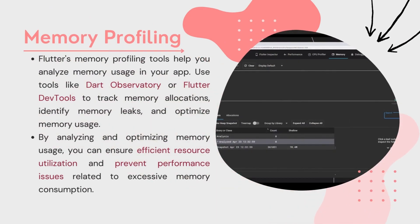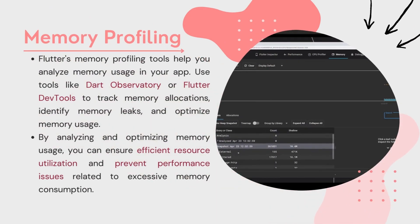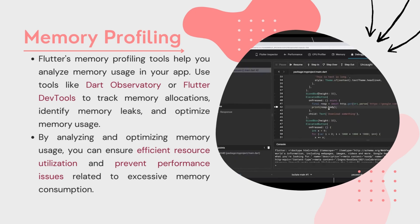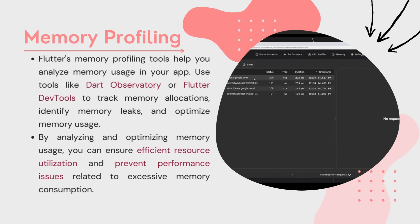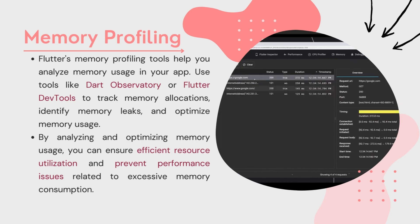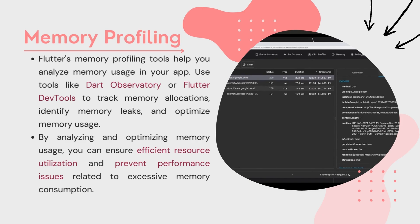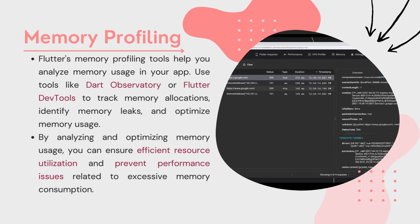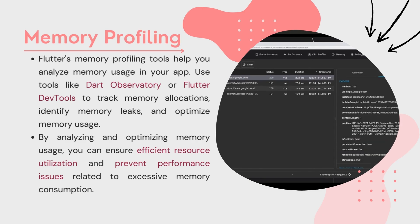Memory Profiling. Flutter's memory profiling tools help you analyze memory usage in your app. Use tools like Dart Observatory or Flutter DevTools to track memory allocations, identify memory leaks, and optimize memory usage. By analyzing and optimizing memory usage, you can ensure efficient resource utilization and prevent performance issues related to excessive memory consumption.